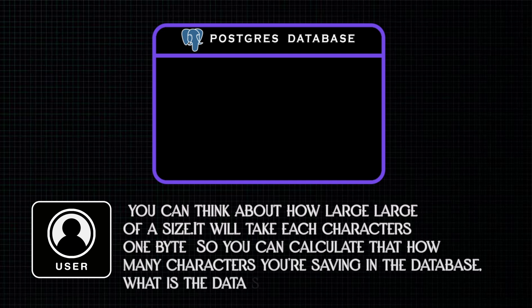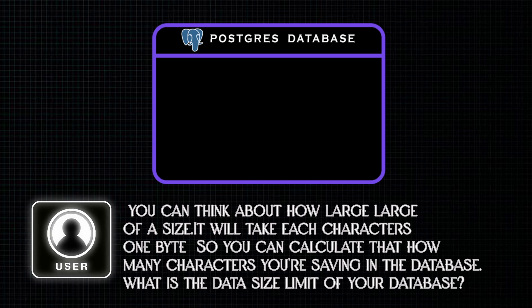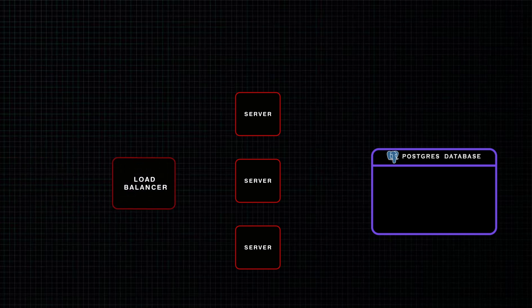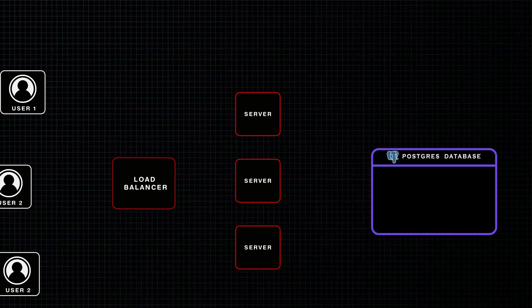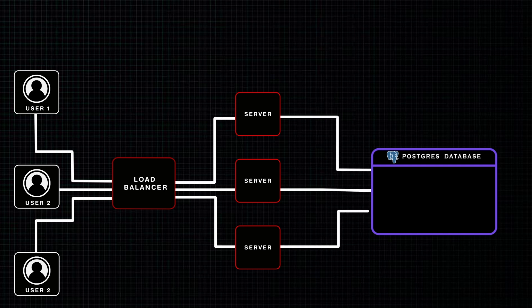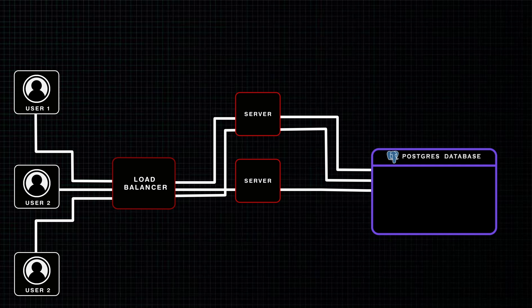Data size calculation is left as an exercise — you can figure out how many characters you're saving and what the database size limit is. For scaling, we currently have one server, which won't scale. We can add multiple servers with a load balancer in front. Always remember to use this pattern in interviews: a load balancer with multiple servers behind it. Now many users can simultaneously make requests, each redirected to a different server in round-robin fashion.